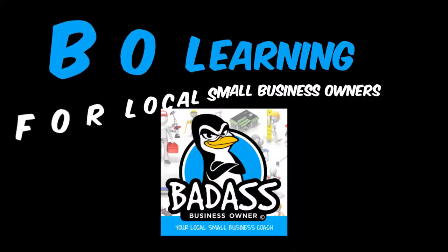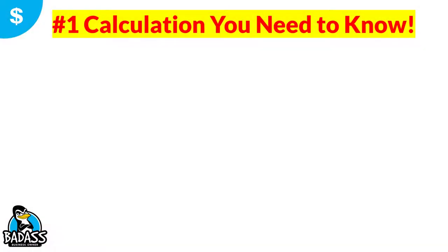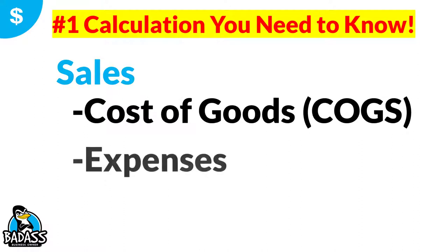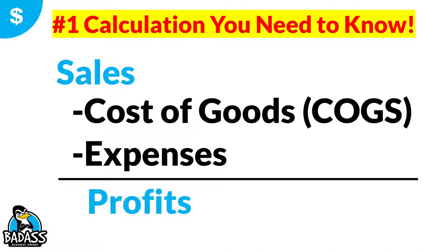All right, first, before we dive in, we must recall the number one calculation that each and every business owner needs to understand. And that is that sales minus cost of goods minus expenses equals your profits. And if you keep this calculation in mind, it's gonna help you with any of the different business terms that are out there to help you understand what they mean.